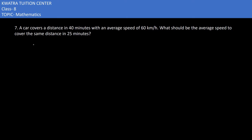Starting with the 7th part: a car is covering a distance in 40 minutes with an average speed of 60 km per hour. So here we are given with time and speed. Speed is given as 60 whereas time is 40.